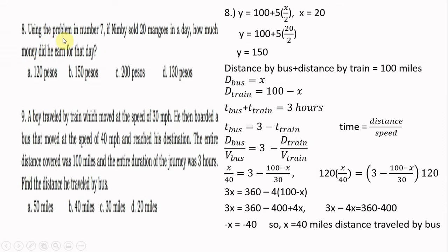Number eight: using the function from number seven, if Nimby sold 20 mangoes in a day, how much did he earn? Substitute x equals 20 into Y equals 100 plus 5 times (x over 2): 20 divided by 2 is 10, times 5 is 50, plus 100 equals 150 pesos. His total income for that day is 150 pesos.